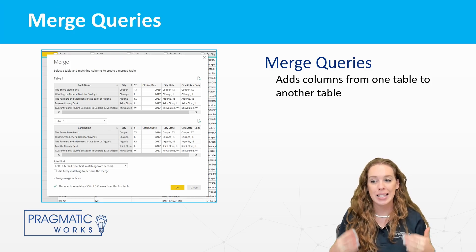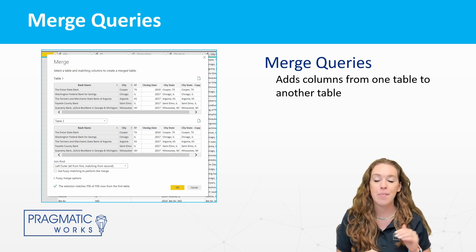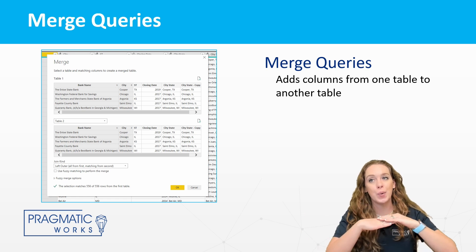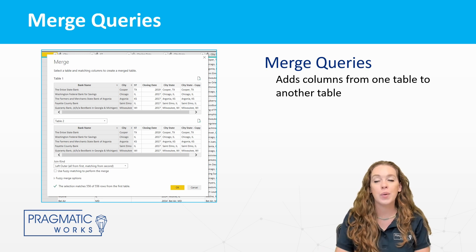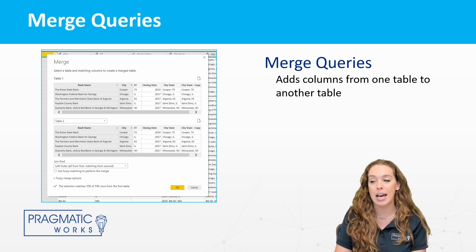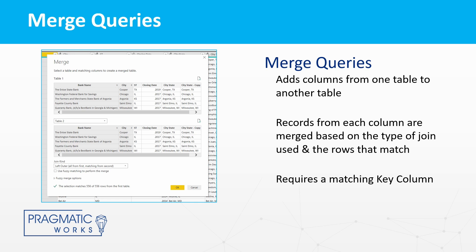When we are doing a merge, this is adding columns from one table to another table. Last time, we did an append where we are bringing rows from one table to the other. This time, we need to make sure that our row structure is the same, so when we're adding new columns on, those will line up. When we are doing a merge, we have to choose our join type, and based on our join type, different information will come through. It is also important that we need to have at least one matching column, so Power Query understands how the information on one table relates to the data in the other table.